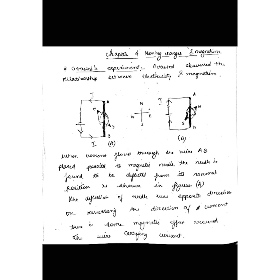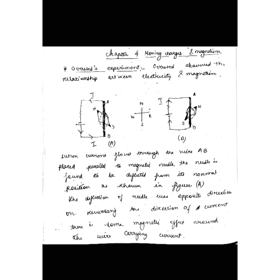When the switch is open and there is no current, the needle remains in its original position — as shown by the dotted position in the figure — it doesn't get deflected. But whenever he switched on the circuit and current flowed through conductor A-B, the needle got deflected. You can see the north end and the south end — the needle deflected to the left.